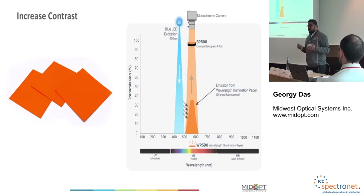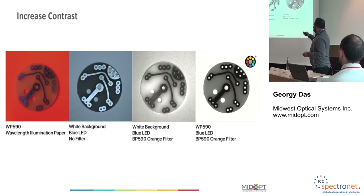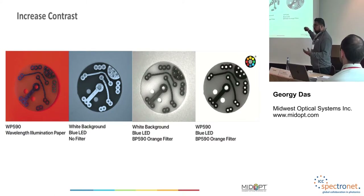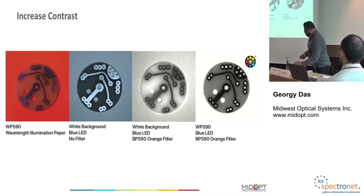Another way to achieve contrast is by changing the background. We have a new product — a wavelength conversion paper — that can be used as a background with your part placed on top of it. When you shine blue light on it, it fluoresces orange and creates very good contrast background. In the image shown, I'm shining a blue light and using an orange bandpass filter, so to the system it appears white. If you need to create a background that's different from your part, or if you want to use a backlight but don't have space for one, you can use this wavelength paper with a front light to create a backlight effect.